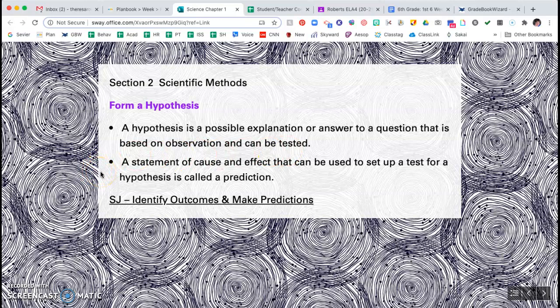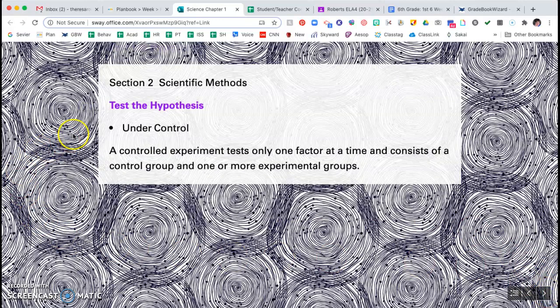So your hypothesis is a statement of cause and effect that can be used to set up a test and this is called a prediction. So I know you've made predictions in the past. So you basically do the scientific method and you don't even know you're doing it. This will be a video that you will watch after this recording.